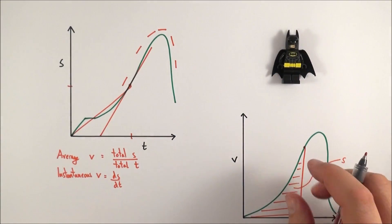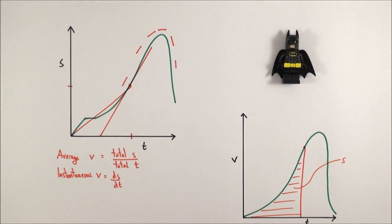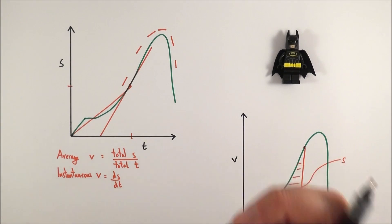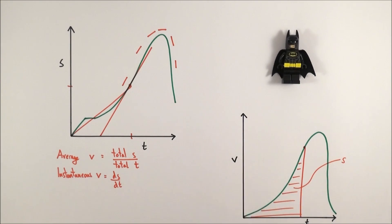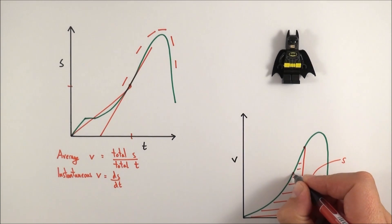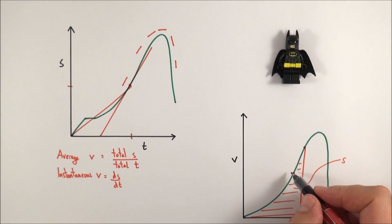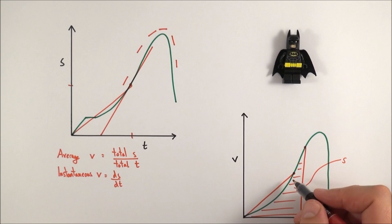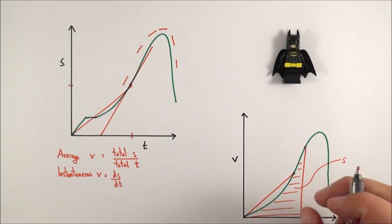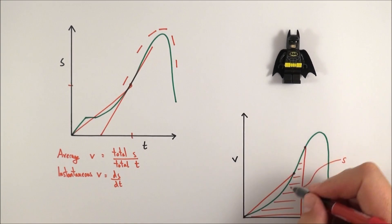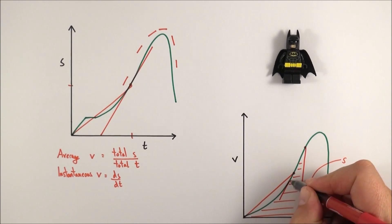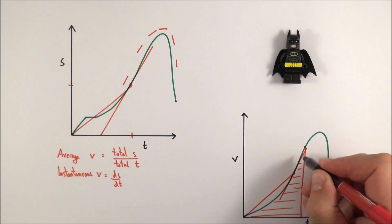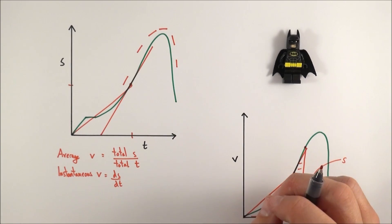We can also use this curve to tell us about acceleration at different times. If it's not a straight line, that means it's a non-uniform acceleration, which is actually quite common. We can look at average acceleration as the total velocity over the total time, which is a line like this. But if we want to find the instantaneous acceleration, again we use a ruler, draw a tangent to the curve, and work out the gradient of that line — and that tells us the acceleration.